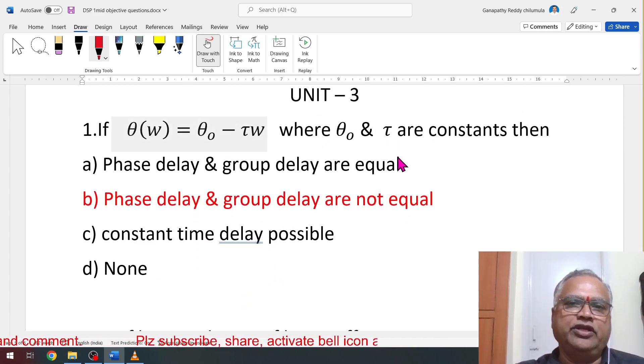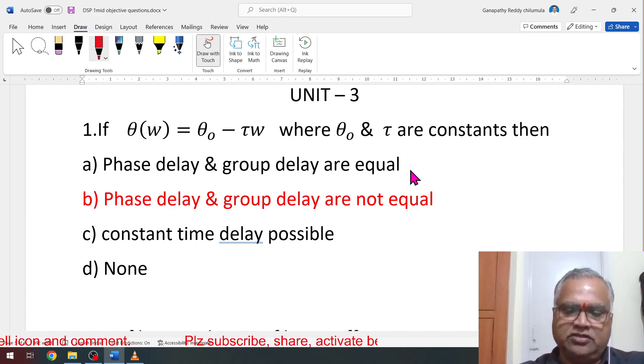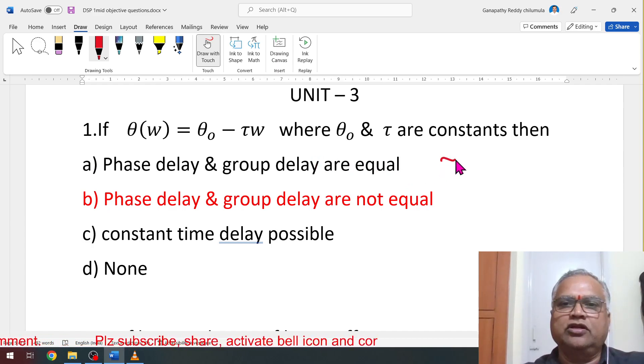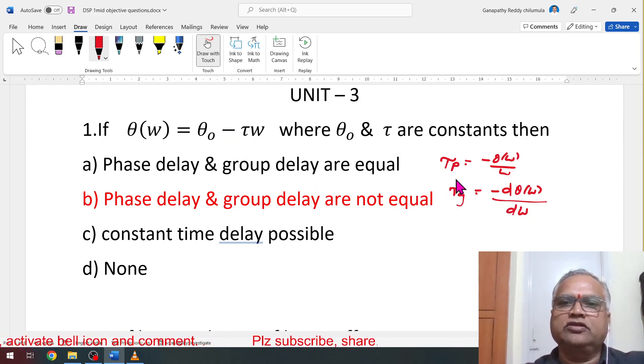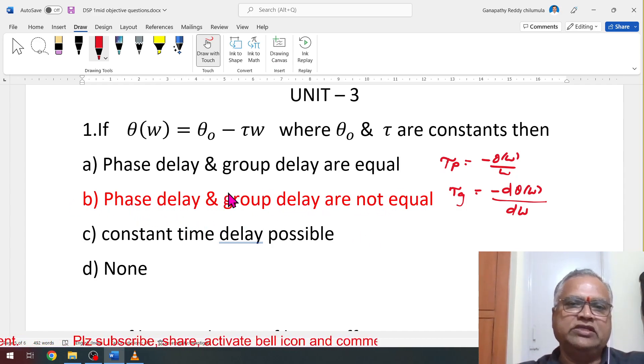And coming to unit 3, IIR filter design. If θ(ω) is so and so, where θ_0 and τ are constants, then phase delay, group delay not equal. What is this formula? τ_p is the phase delay equal to -θ(ω)/ω. Then group delay is τ_g that is -dθ(ω)/dω. Because of this, both will not be equal. Therefore, phase delay and group delay are not equal. B is correct.